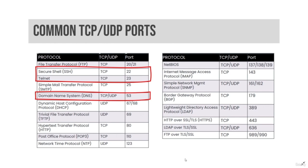SMTP is the Simple Mail Transfer Protocol, which is used to transfer email between servers. SMTP servers listen on TCP port 25. POP version 3, also known as Post Office Protocol, and IMAP, also known as Internet Message Access Protocol, are used for client-server email access and use TCP ports 110 and 143 respectively. DNS is the Domain Name System — a distributed global database that translates names to IP addresses and vice versa. DNS uses both TCP and UDP.